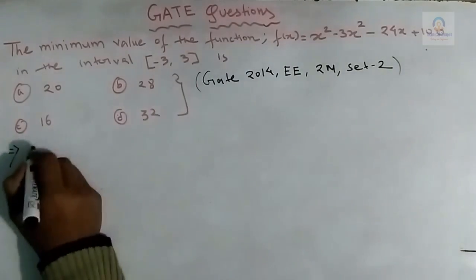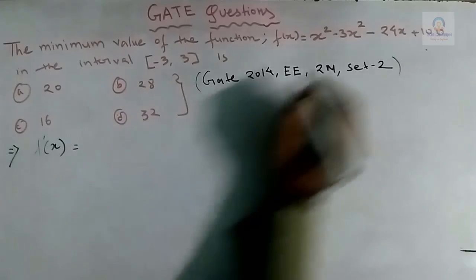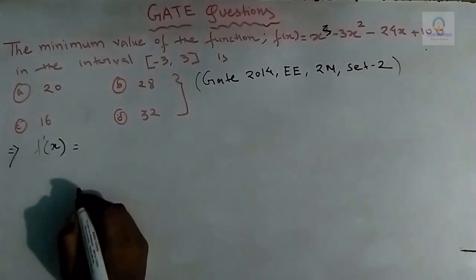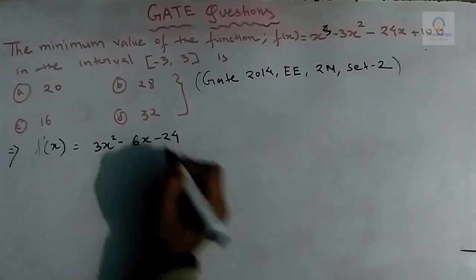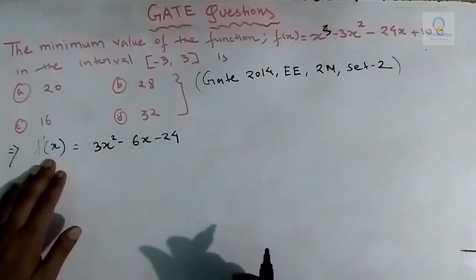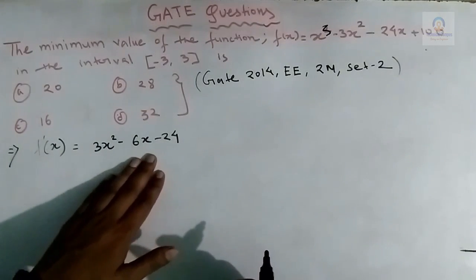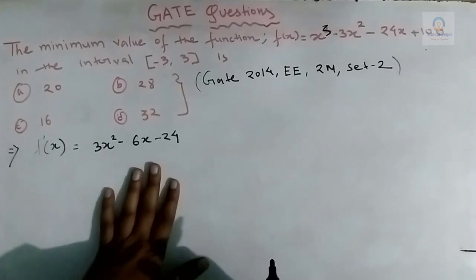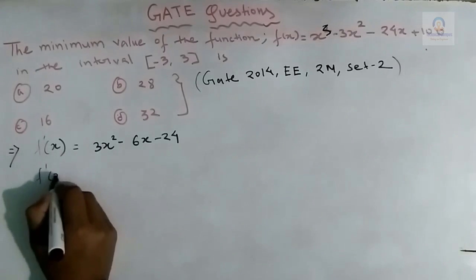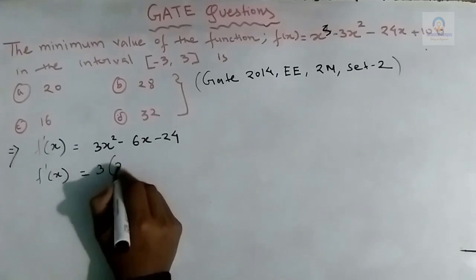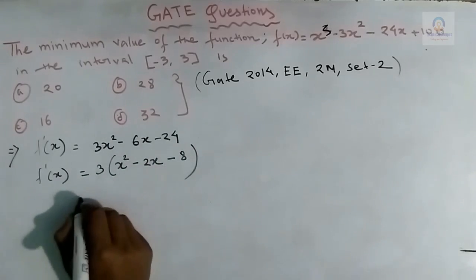The first step is to calculate f'(x). Since f(x) is a cubic, f'(x) = 3x² - 6x - 24. We equate f'(x) to zero to find the critical points — the roots of this equation are known as the critical points of the function. Taking 3 common gives x² - 2x - 8.